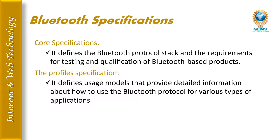There are two types of Bluetooth specifications: core specification and profile specification. The core specification defines the protocol stack and the requirements for testing and qualification of Bluetooth-based products. The profile specification defines usage models that provide detailed information about how to use the Bluetooth protocol for various types of applications.